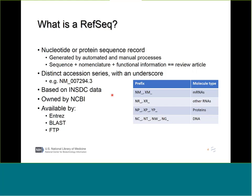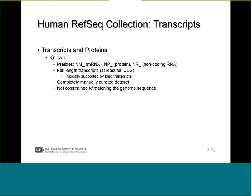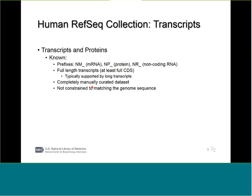RefSeq sequence information is inherently from INSDC, but the annotation is something we produce here at NCBI. The records are owned by NCBI, so we can update all of this information whenever circumstances arise. The human dataset can be broken down into a few parts. The one you're probably most familiar with is the set of transcripts and proteins we refer to as the known set. These are recognized by the NM and NP accession prefixes, and R's for non-coding RNAs. The emphasis within the known dataset is that these are all RNAs we think exist in the cell.